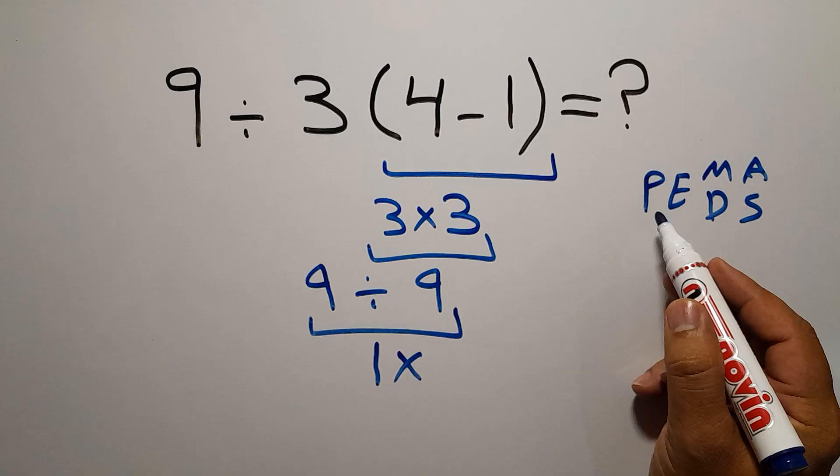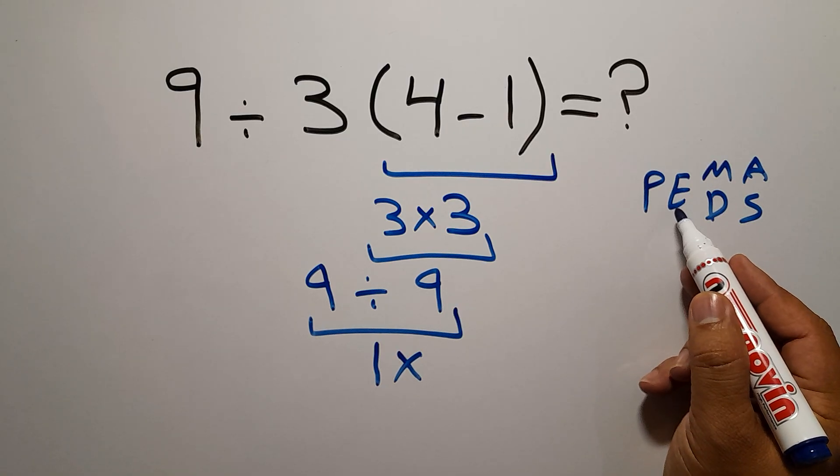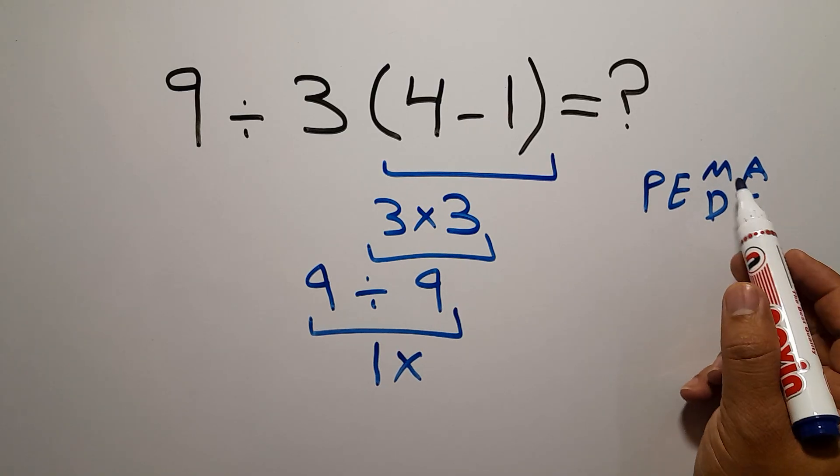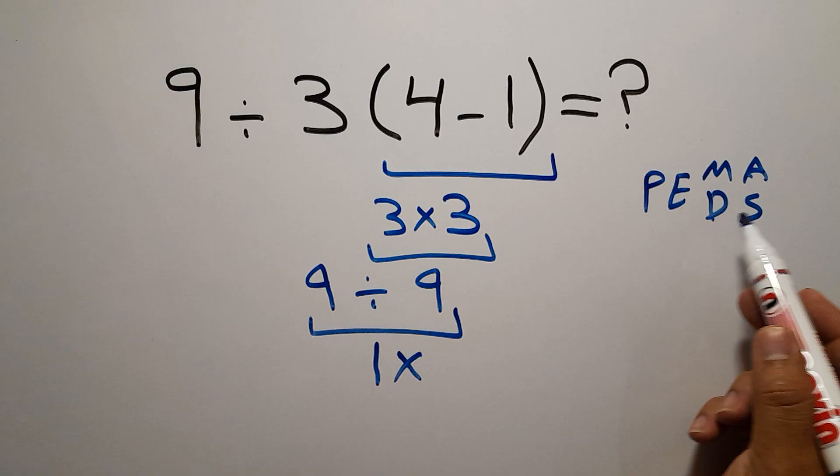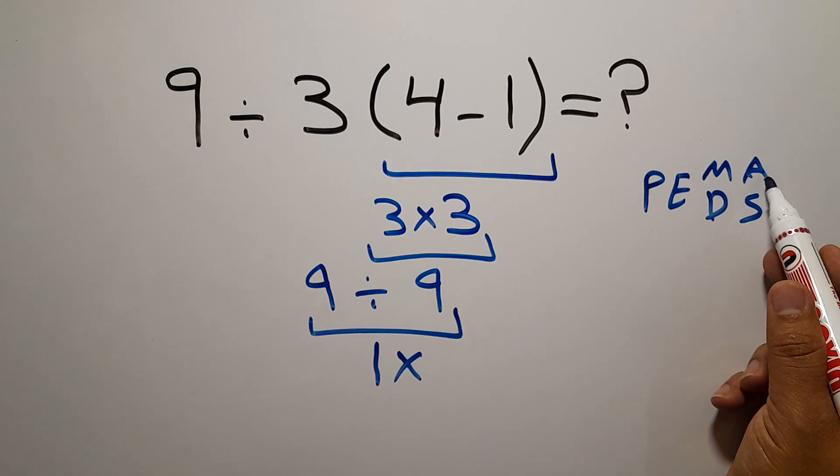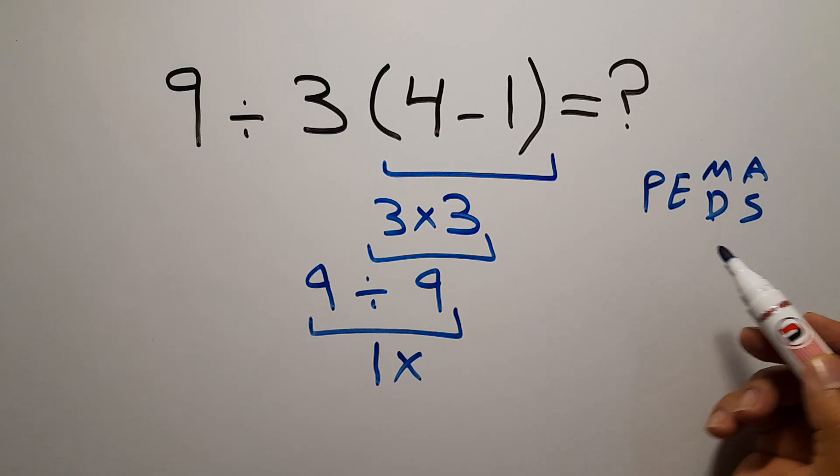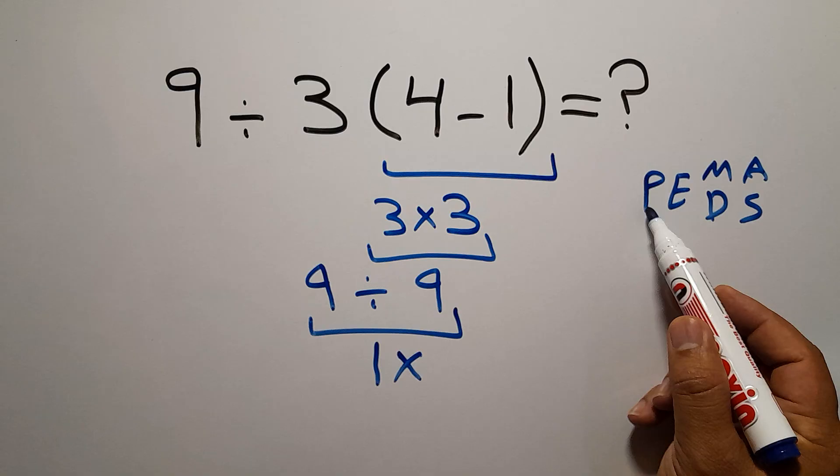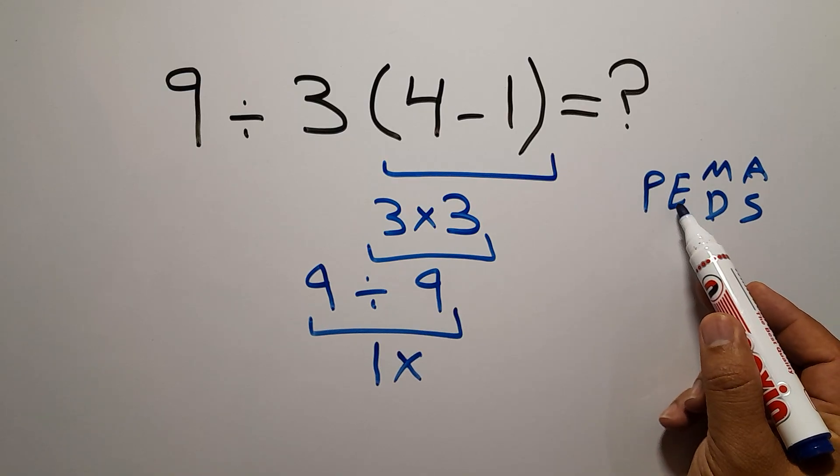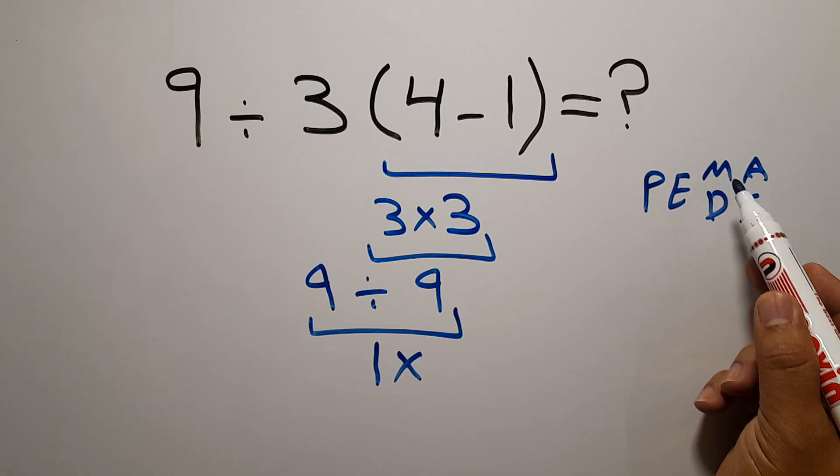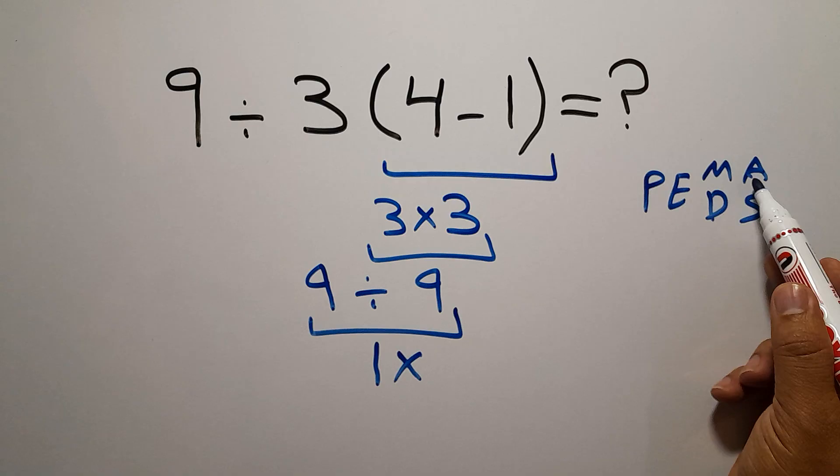P stands for parentheses, E stands for exponents, M and D stand for multiplication and division, and A and S stand for addition and subtraction. First we do parentheses, then exponents, then multiplication or division, and finally addition or subtraction.